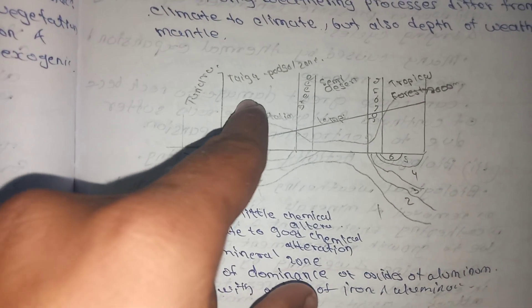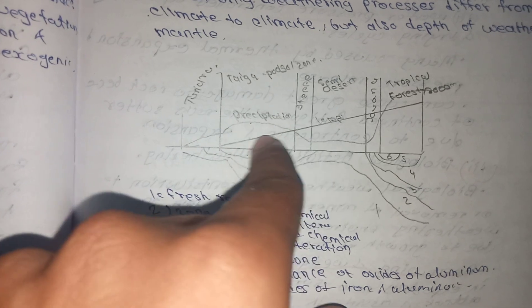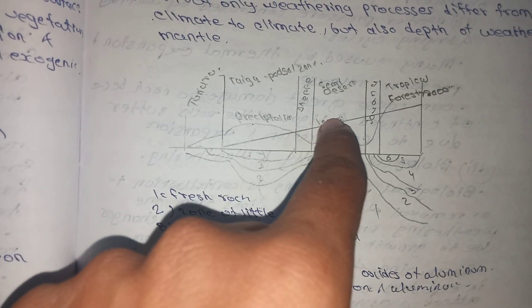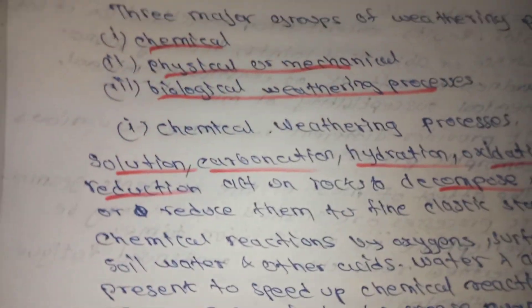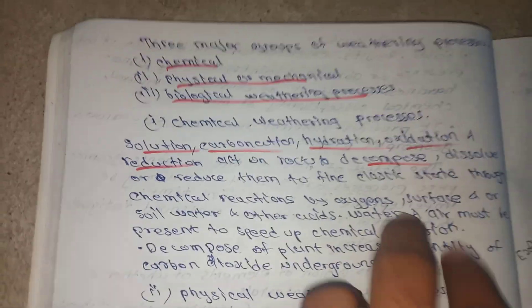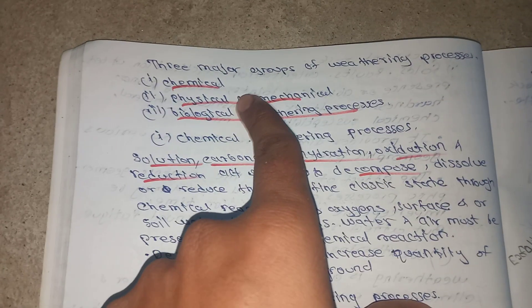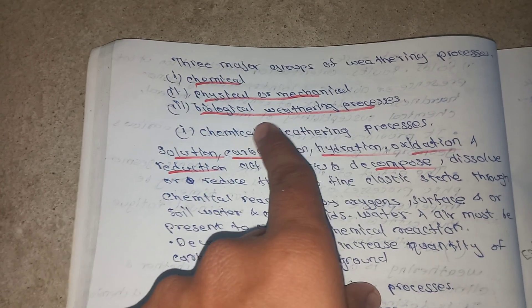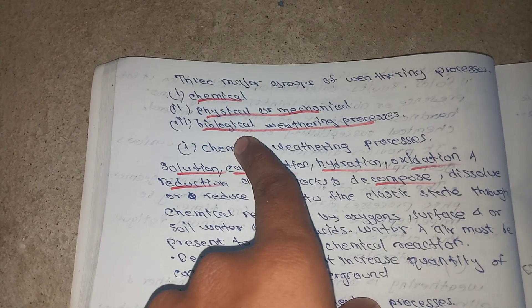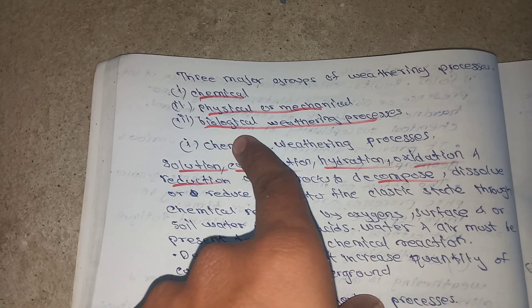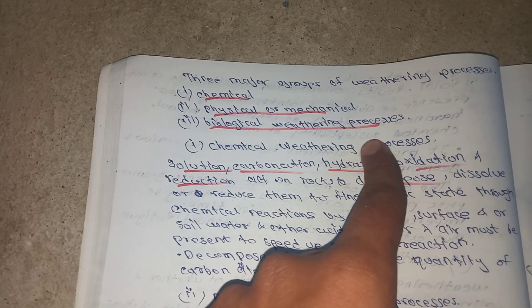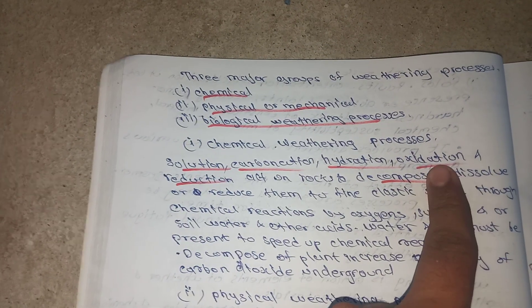Here we can see climate zones such as tundra and taiga, with variations in precipitation, temperatures, and depth of chemical weathering. There are three major groups of weathering processes: chemical, physical or mechanical, and biological weathering processes, which we will cover in the next lecture.